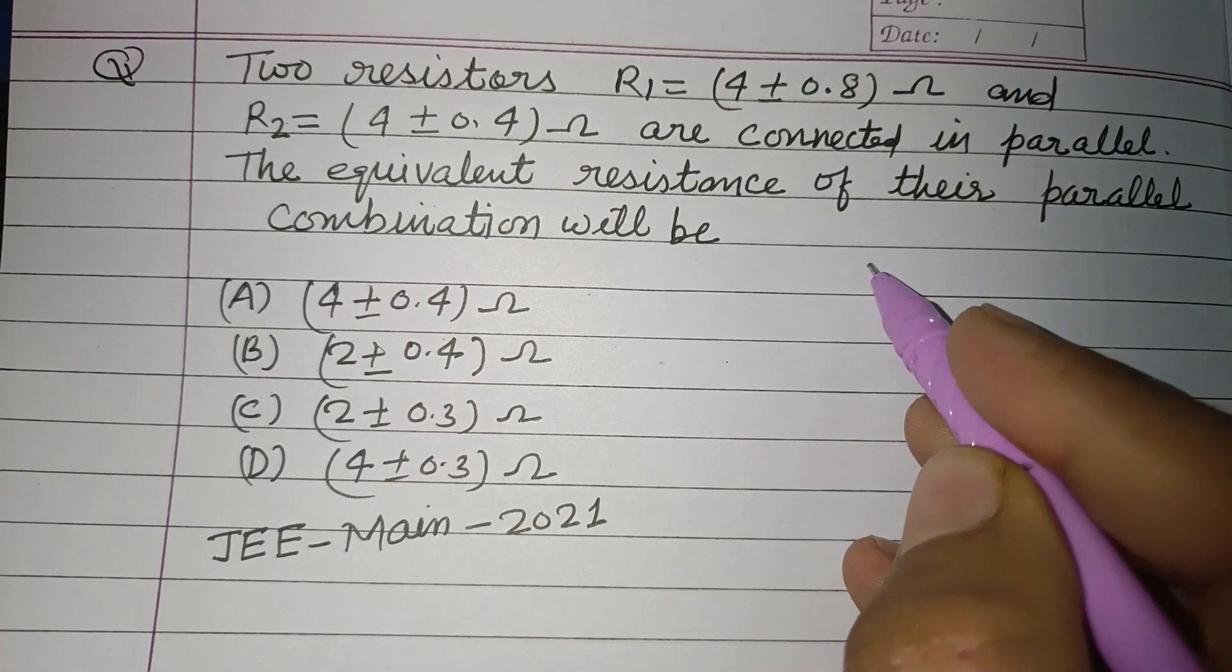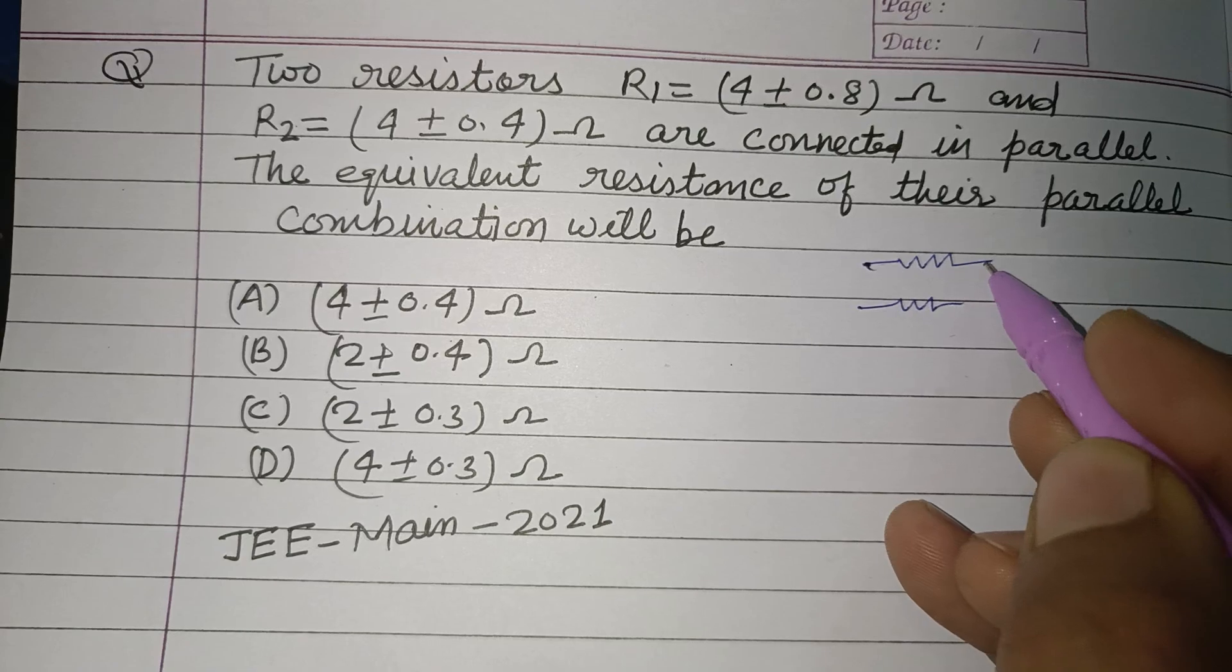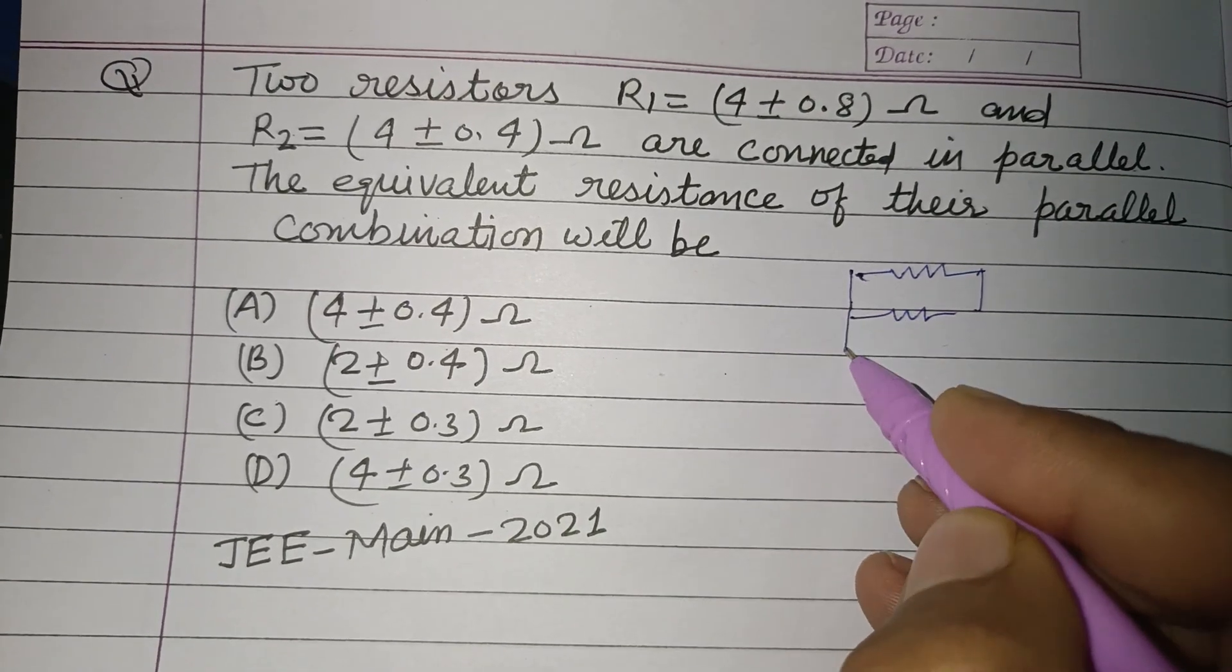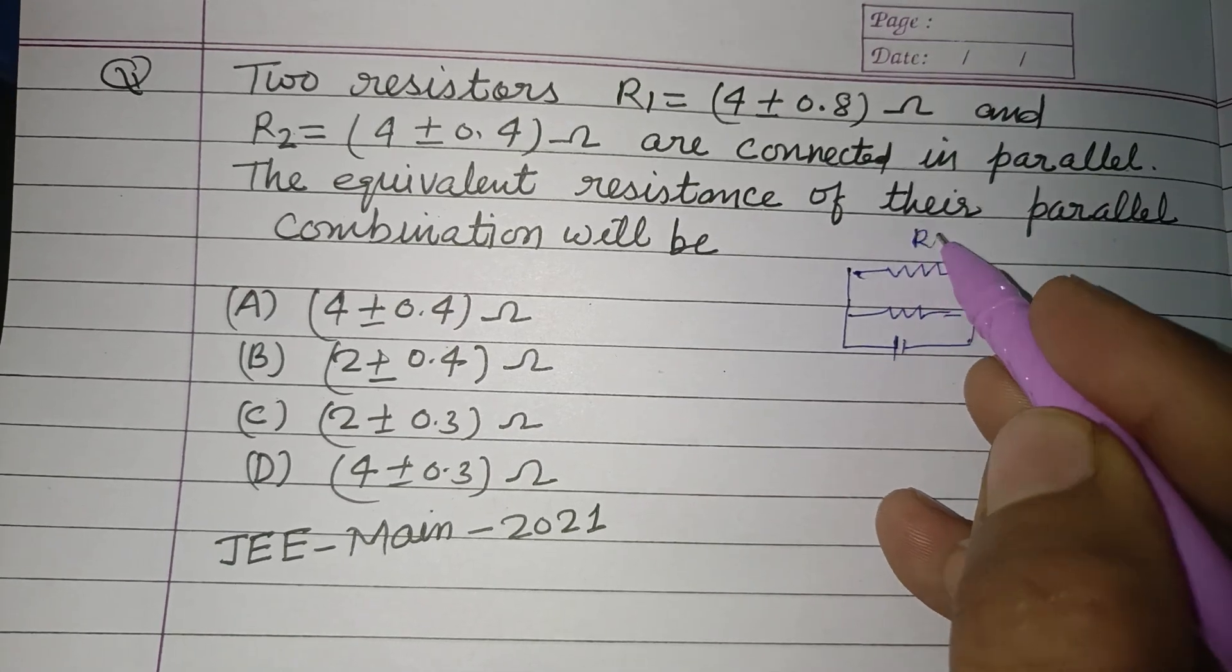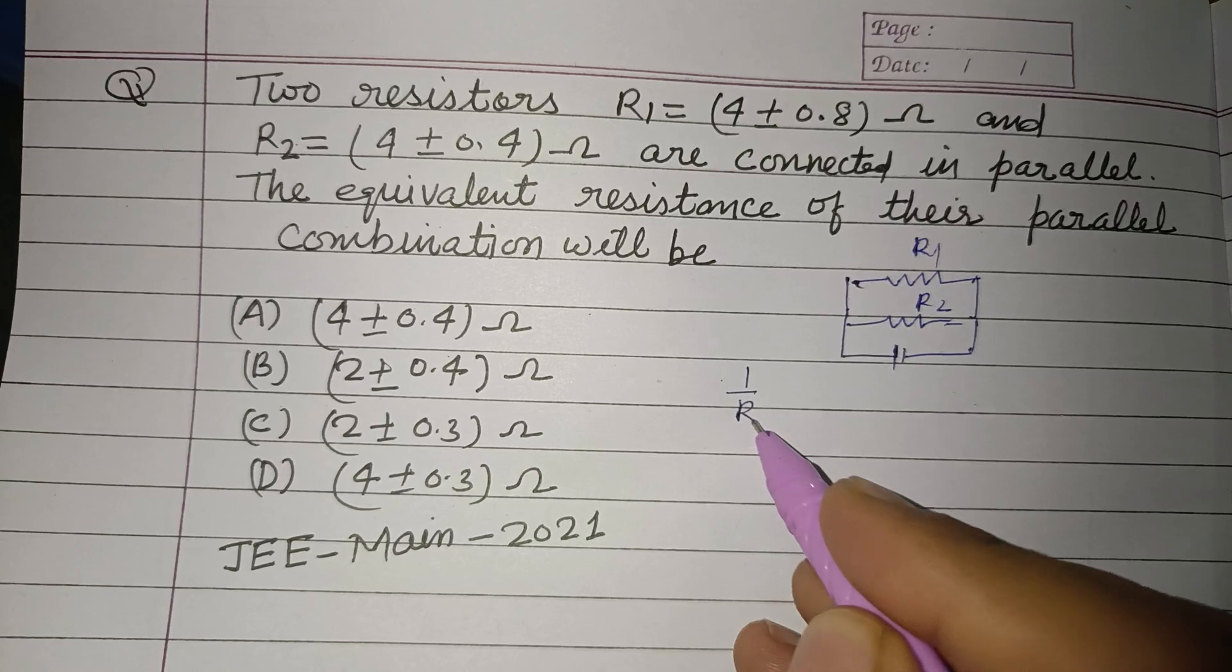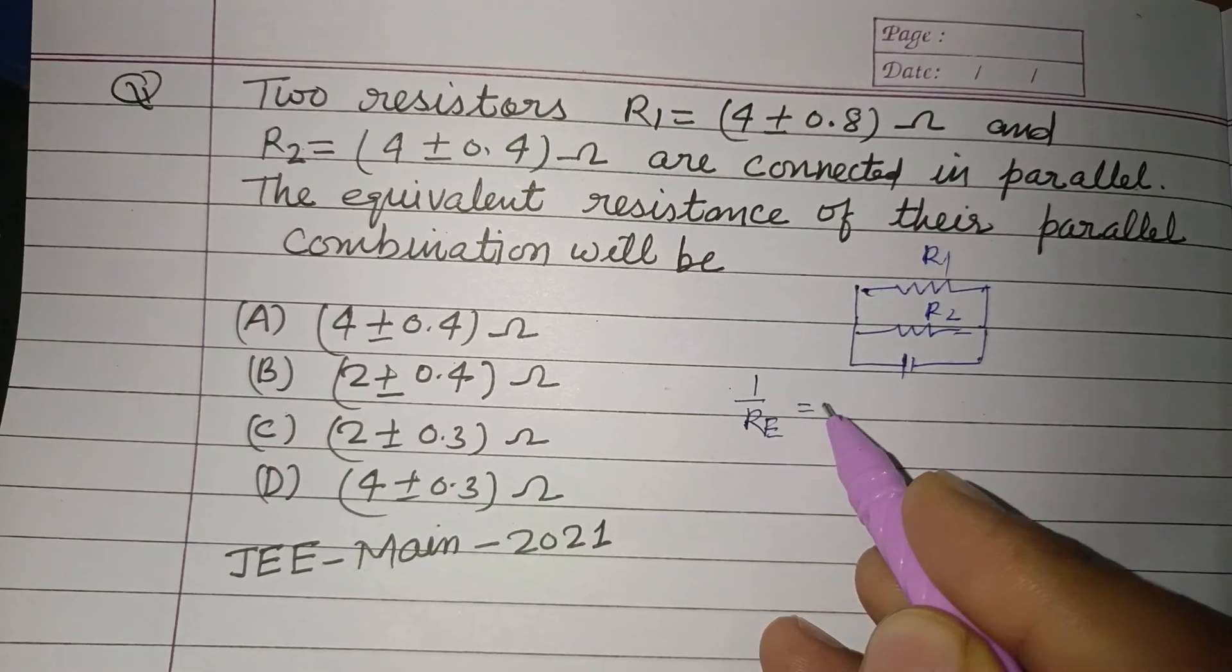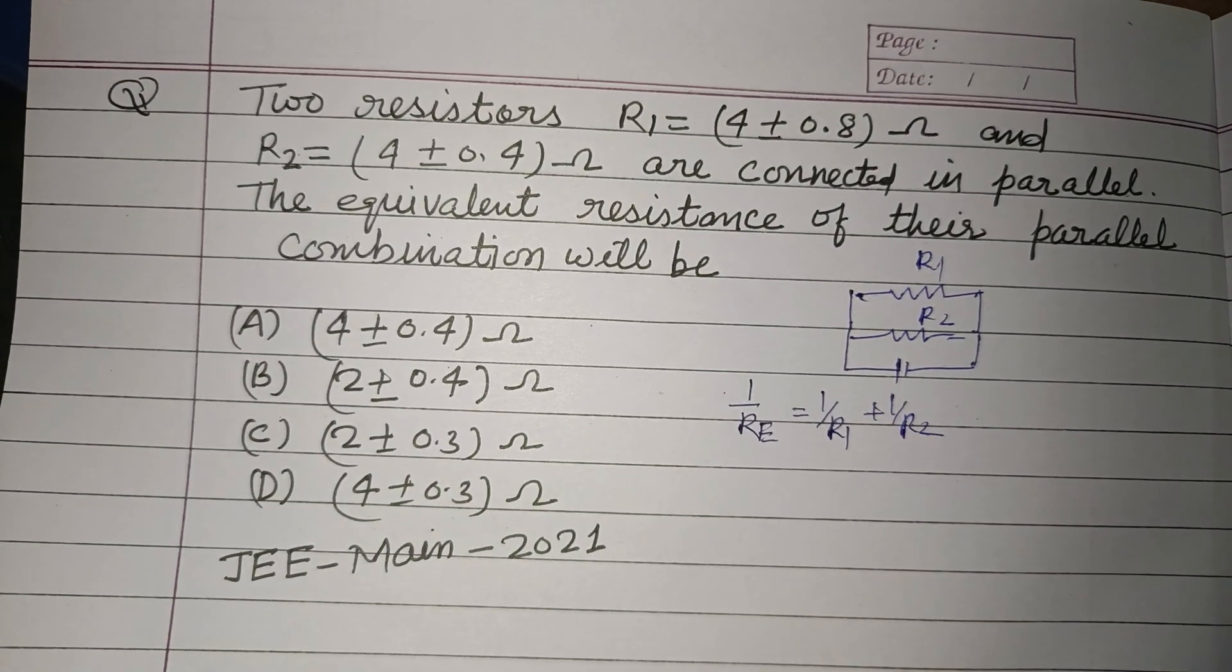So students, here are two resistors which are connected in parallel. R1, R2. So their equivalent resistance RE equal to 1 upon R1 plus 1 upon R2.